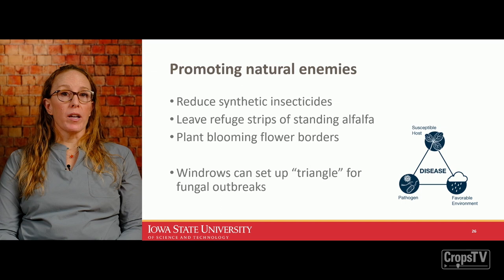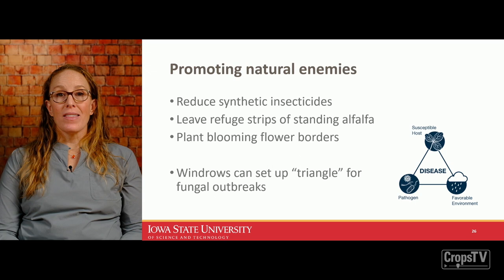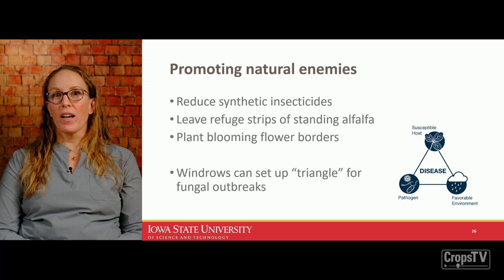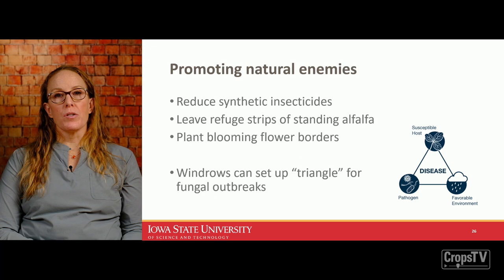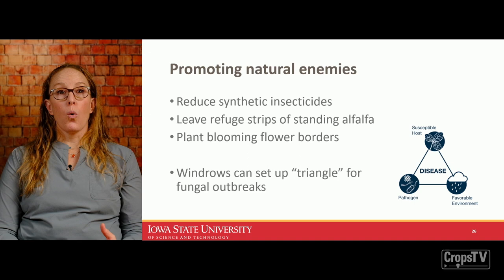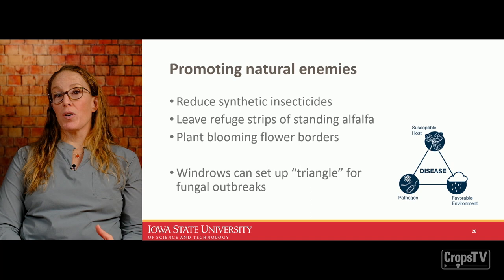It's hard to have both natural enemies and constant use of synthetic insecticides. Around hay fields, pastures, and alfalfa, leaving refuge strips or anything blooming, especially on borders, will attract parasitoids and predators. Also consider the disease triangle: susceptible hosts (caterpillars), pathogens (fungal, bacterial, and viral), and favorable environments (high humidity and temperature). Wind rows or areas with high residue temperature and moisture can set up fungal outbreaks that quickly suppress fall armyworm.